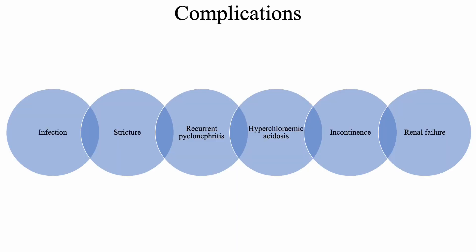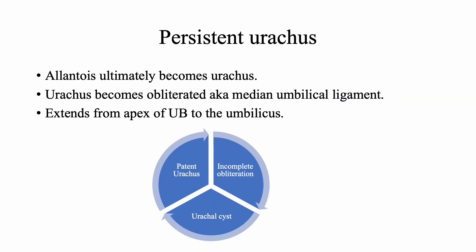Complications of the surgery include infection, stricture formation — mainly at the ileal-ureteric anastomosis — recurrent pyelonephritis, hyperchloremic acidosis, incontinence, and renal failure. Regarding urinary diversion, if the urine gets exposed to the GI tract, it can lead to hyperchloremic acidosis.